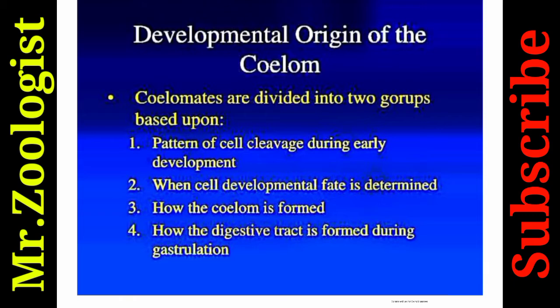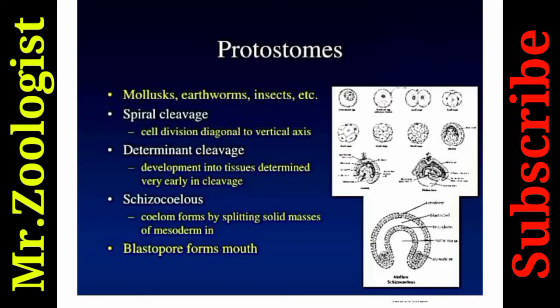The developmental origin of the coelom divides coelomates into two groups based on cell cleavage pattern during early development. Protostomes — such as mollusks, earthworms, and insects — undergo spiral cleavage, where cell division is diagonal to the vertical axis. They show determinate cleavage, meaning cell fate is predetermined very early. The coelom forms by splitting solid masses of mesoderm called schizocoelous formation. The blastopore forms the mouth in protostomes.